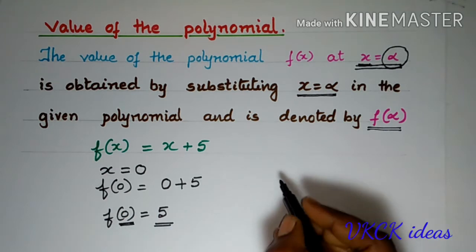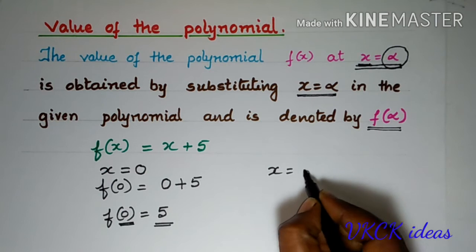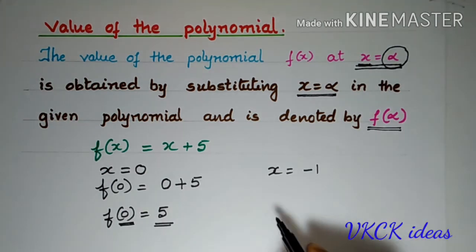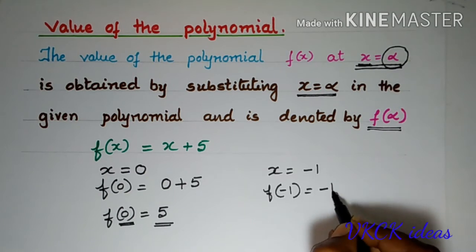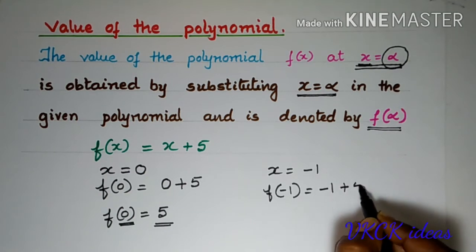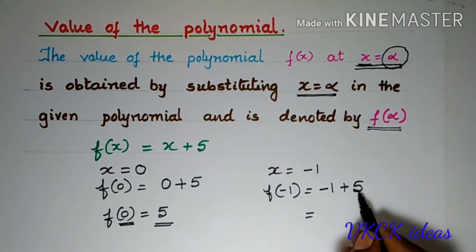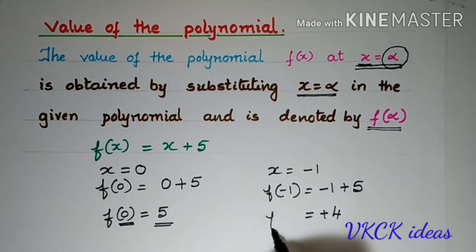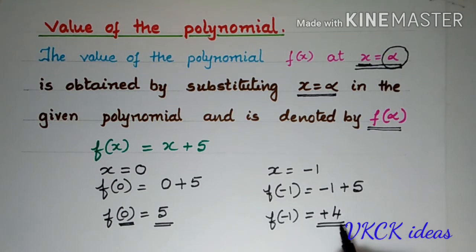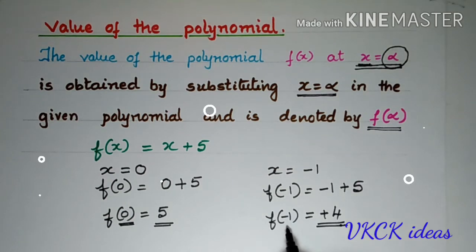Similarly, if you take x = -1, the value will change. So, f(-1) will be -1 + 5. The sum is +4. So, f(-1) = 4, which is the value of the polynomial when x is -1. Simple, is it?